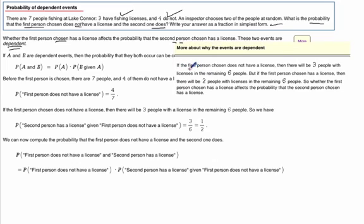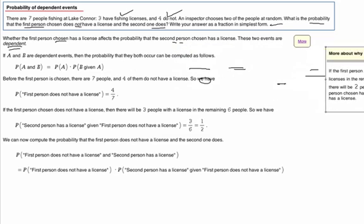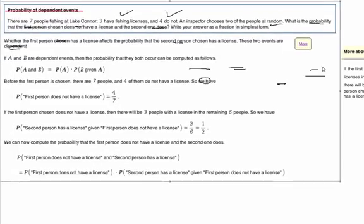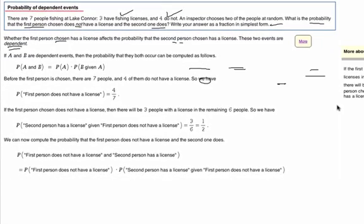Well, we can see that if the first person chosen does not have a license, then there's only three people with licenses left in the remaining six for the second person. But if the first person does have a license, then there's only two remaining out of the six for the second. So you see how those affect the second part of our question. So those are dependent. They depend on each other.